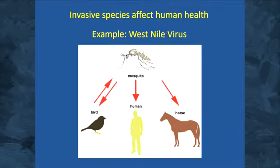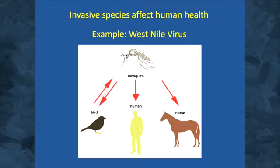The first reason we should care about invasive species is that they can affect human health. One example I like to use is the mosquito, which is not native to North America — it can spread West Nile virus by picking up the virus from infected birds and transmitting it to humans and livestock. Some invasive species can serve as vectors for disease that directly impact humans.